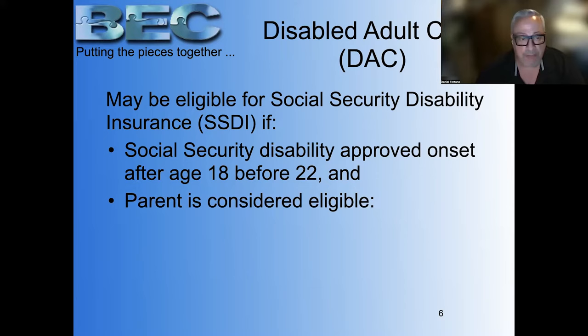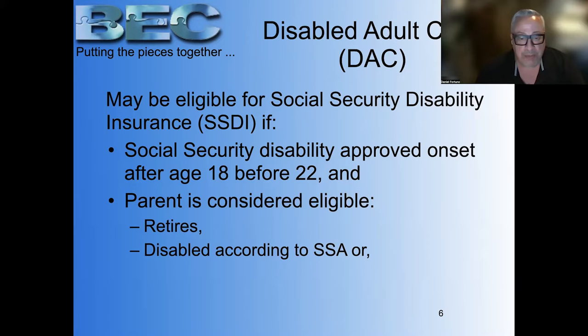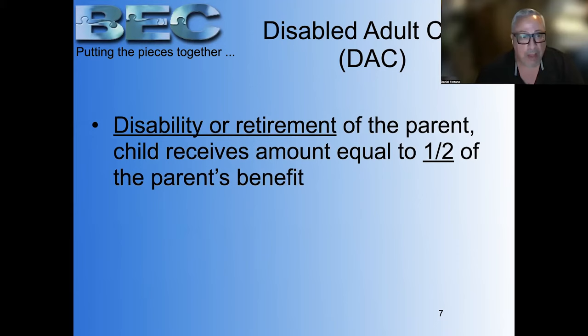The child will get a benefit when a parent is eligible and the child has met the definition of disability. Eligible means mom or dad retires, becomes disabled and is receiving SSDI benefits, or the parent has passed away — those are the three triggering events. At disability or retirement of the parent, the child is eligible to receive 50% of what the parent's benefit would be — whoever's the highest wage earner. And it doesn't come out of the parent's benefit. For example, if dad is eligible for $3,000, his daughter Susan would be eligible for $1,500.